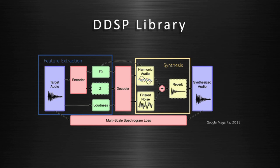There's a harmonic synthesizer and a subtractive synthesizer. These are added together, and then optionally reverb can be added. In this way, the audio is resynthesized, and the autoencoder learns to construct the input audio as perceptually faithful as possible.